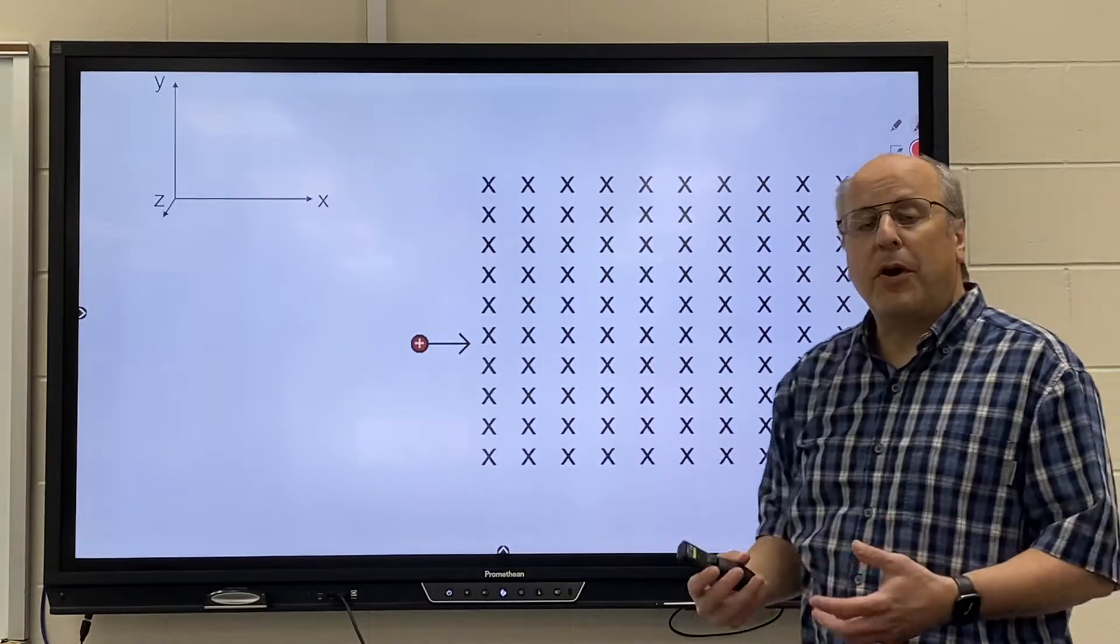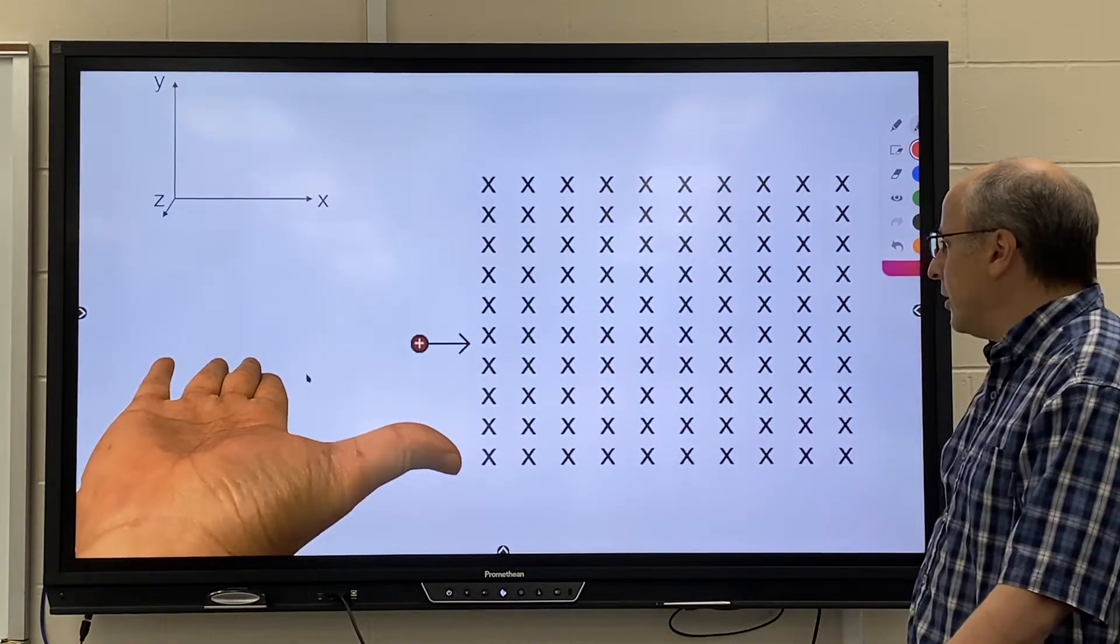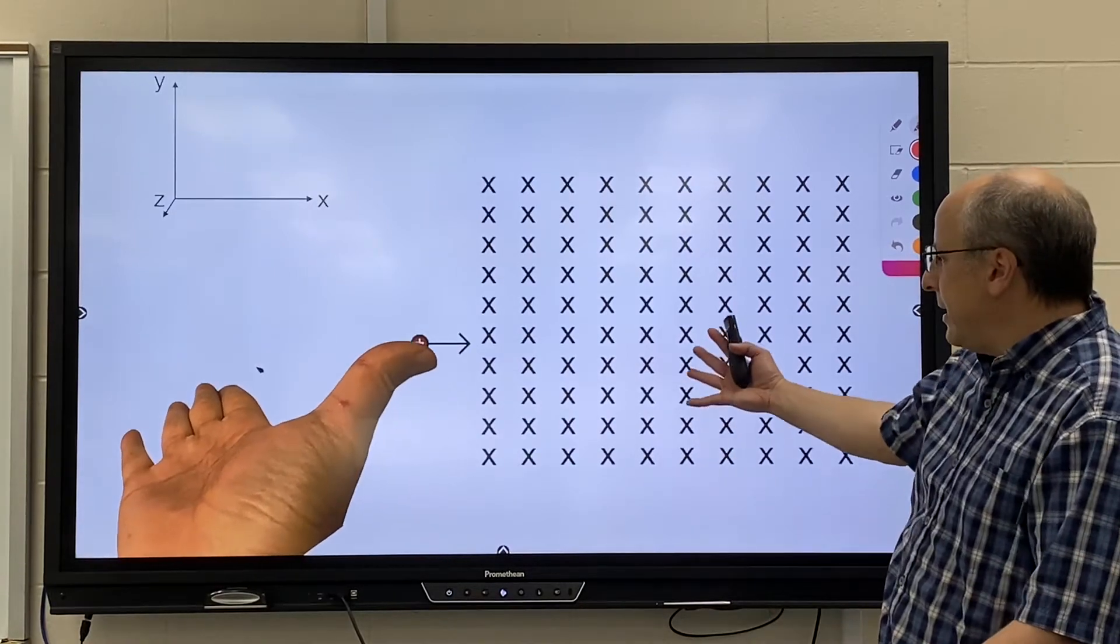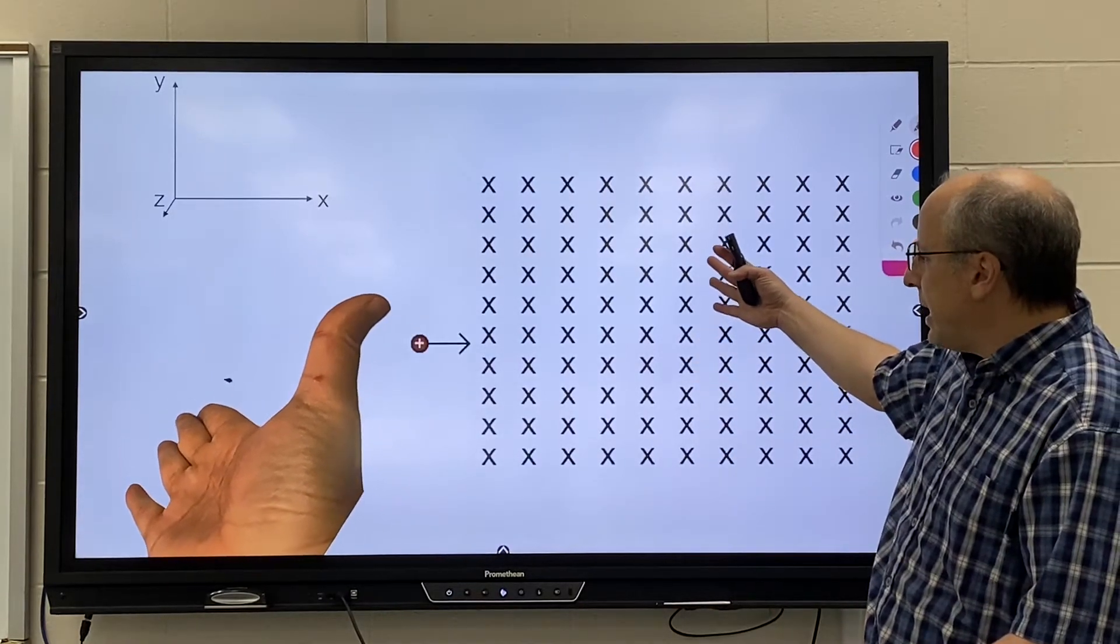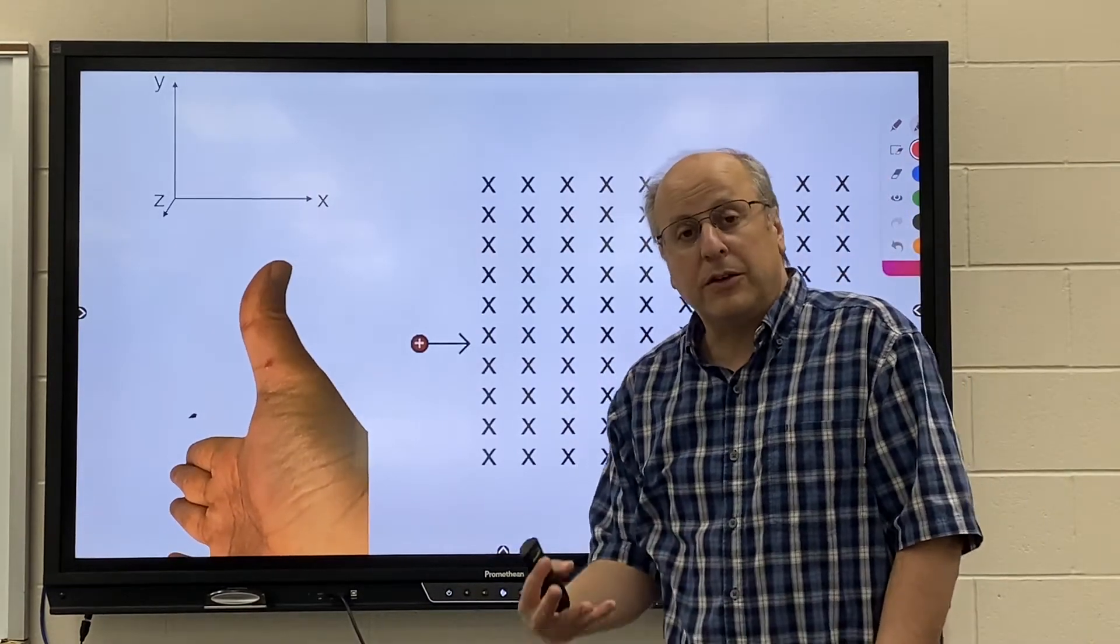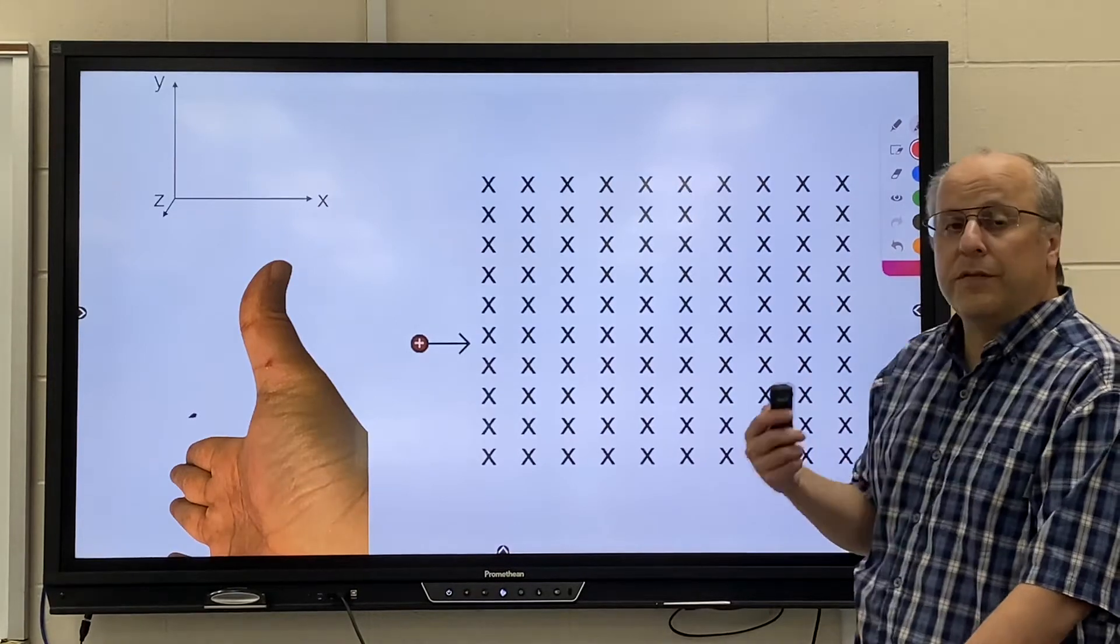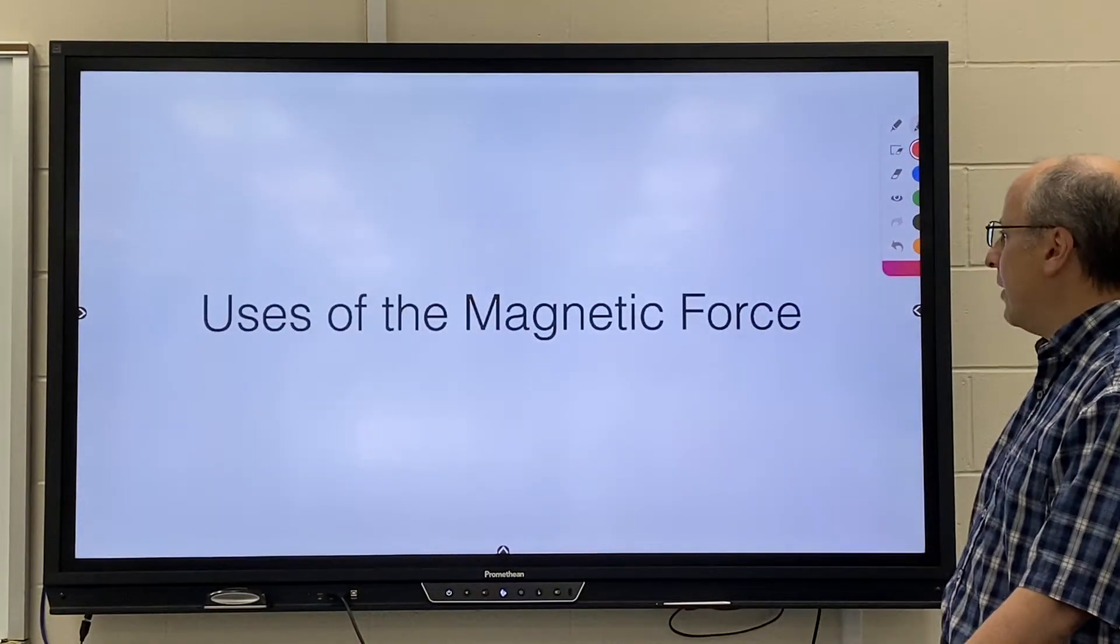We tracked the particle in that magnetic field, and that's what we'd like to look at today, realizing again that as the particle changes direction, the force changes direction, and the particle follows a partial circular arc. If it's in far enough, it's going to follow a complete circular arc.